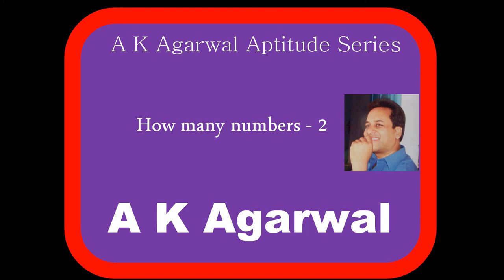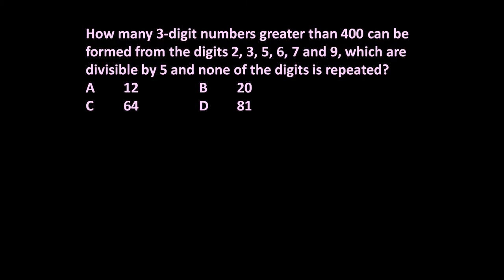Hello friends and welcome to AK Agarwal Aptitude Series. In this session we are going to learn a technique for solving a problem: how many three-digit numbers greater than 400 can be formed from the digits 2, 3, 5, 6, 7, and 9 which are divisible by 5?